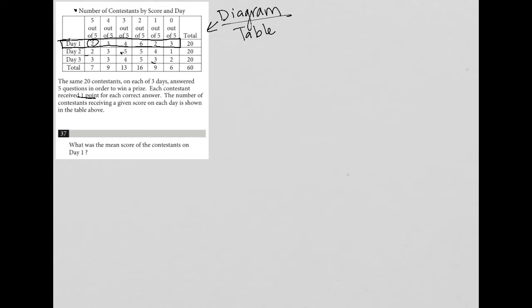So what does this first two here for day one mean? Well, it means that there were two contestants that scored five out of five, which means I have two scores of five. And then the three here means that there were three contestants that scored four out of five. So I'd have three contestants that scored a four. And then there are four contestants that scored a three.